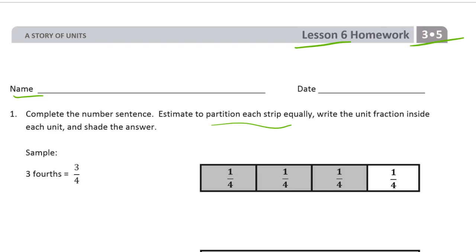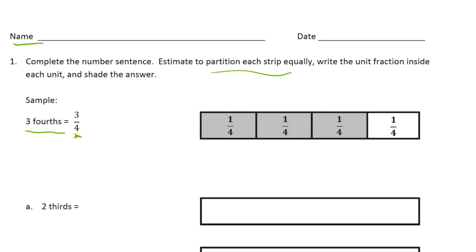Here's our example. You see the tape diagram — it's in four equal parts. Three of them are shaded, so each one is one-fourth, and three are shaded. This is the unit form, and then that's the fraction. So we're going to write the fraction given the unit form version of the fraction.